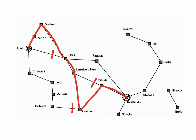Breadth-first search tends to be good in situations where short paths to the goal do exist, but there are very few of them. Depth-first search tends to be good in situations where all paths to the goal are long, but there are many of them to choose from.